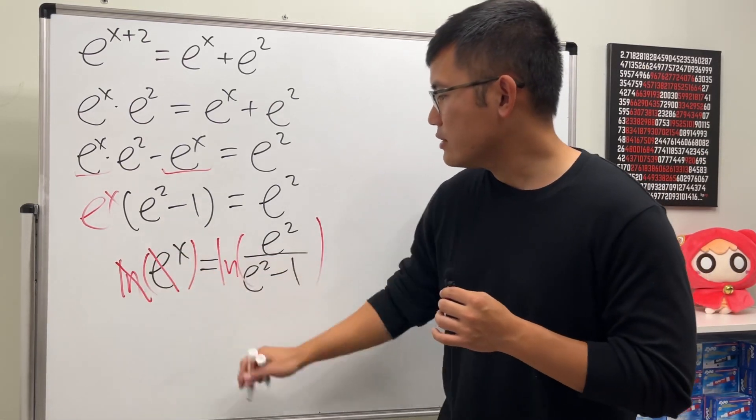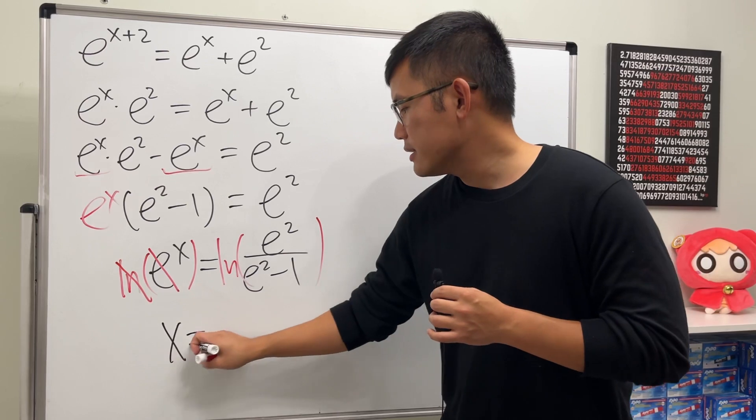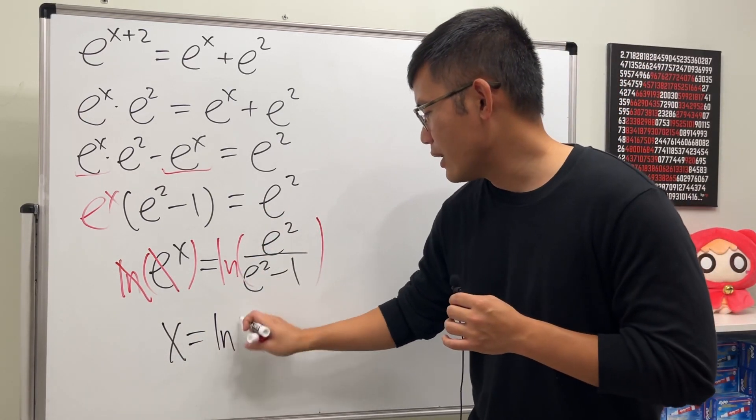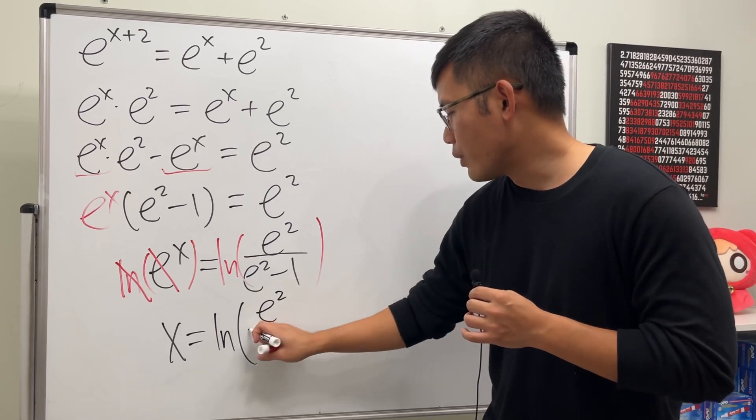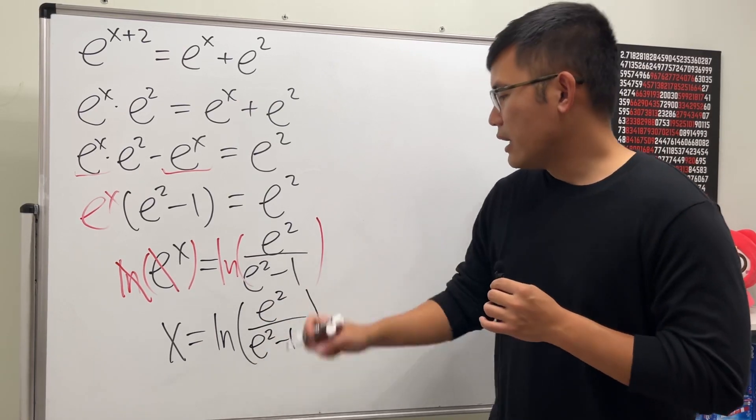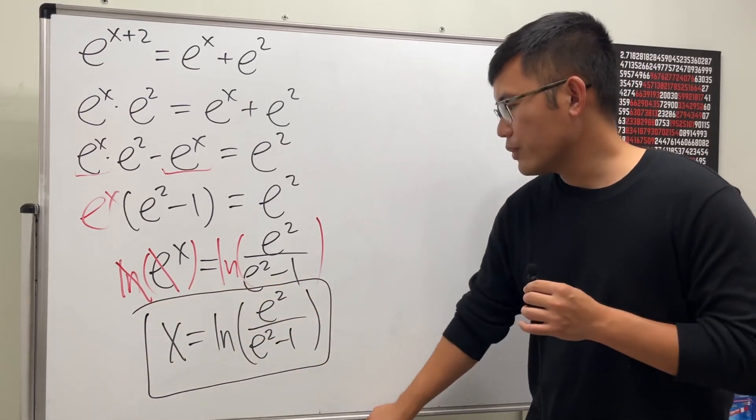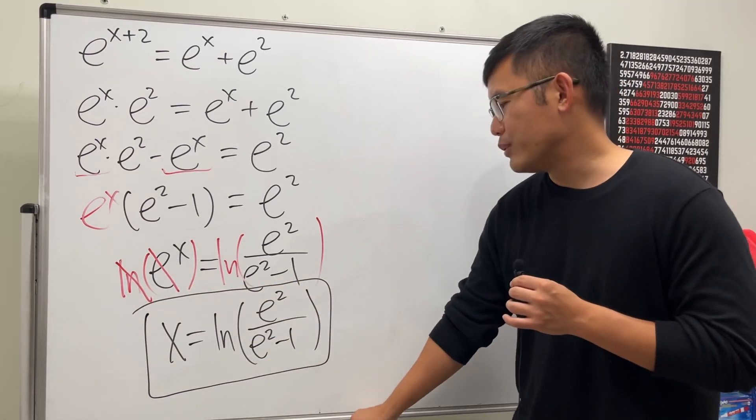If you want to put them together, you just write it down as ln of (e to the second power) over (e to the second power minus one). I think this right here is pretty clean. But of course, if you want to break them apart by using the rule of logarithms...